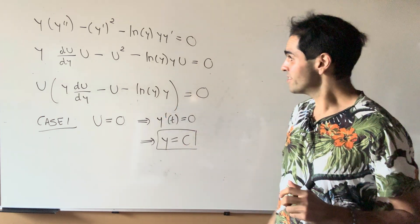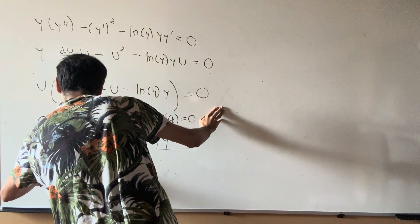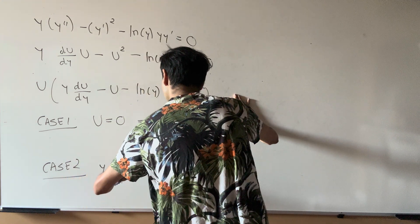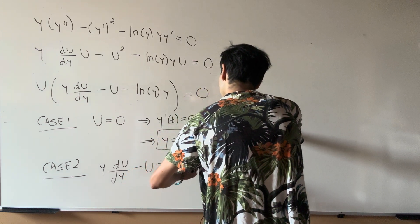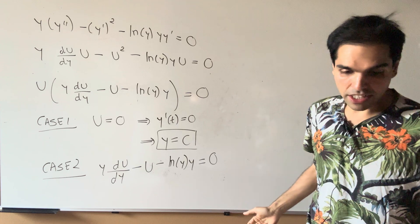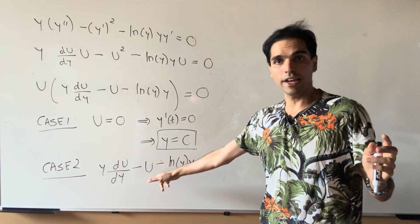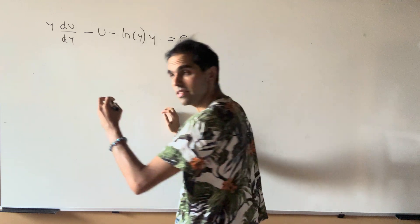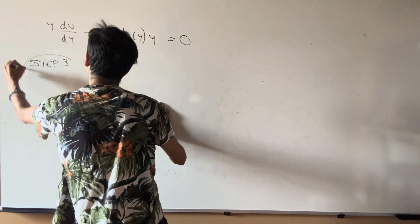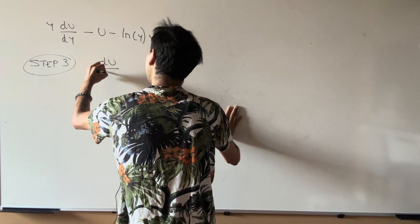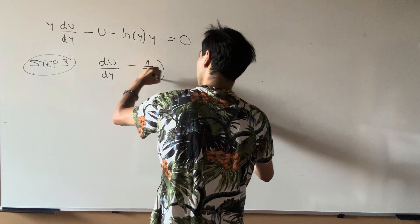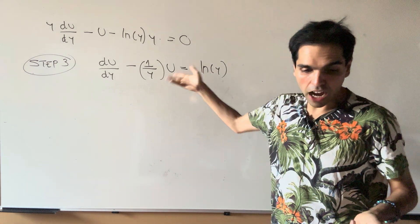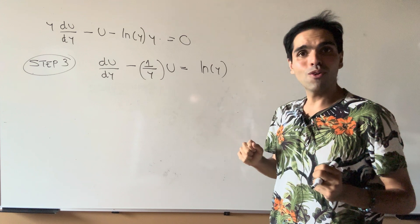Let's look at the more interesting case, where the other factor is zero: y du/dy minus u minus ln(y) times y equals zero. As mentioned, this becomes a first-order differential equation in u. Let's clean this up a bit.